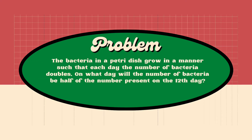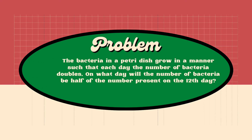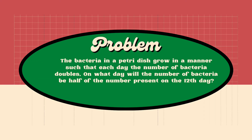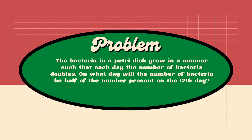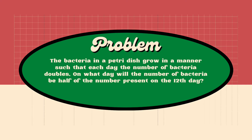The bacteria in a petri dish grow in a manner such that each day the number of bacteria doubles. On what day will the number of bacteria be half of the number present on the 12th day?